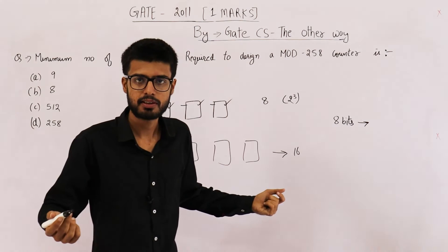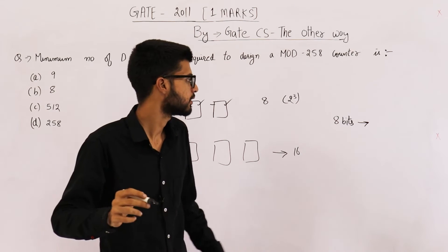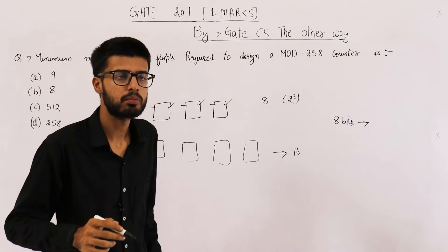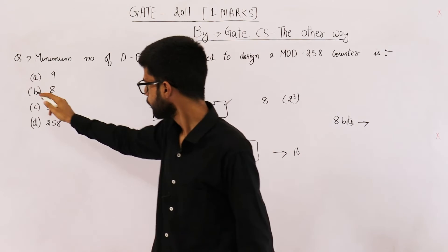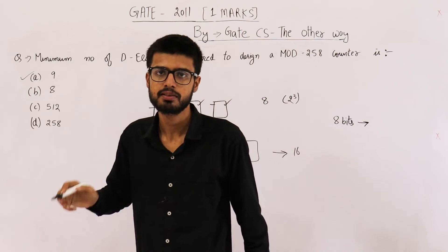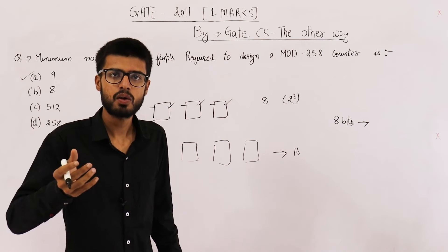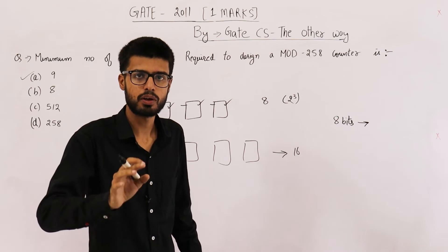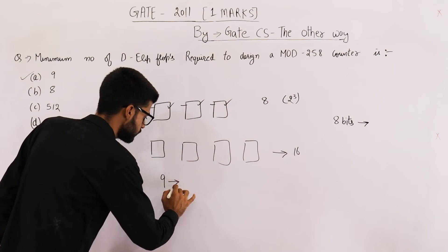To get 258 states, with 8 bits you can get only 256 states. That means we need to increase the number of bits. So you actually need 9 bits. The answer to this question is 9 bits. With 9 bits we can design such a counter, though we're not using 9 bits to full efficiency.